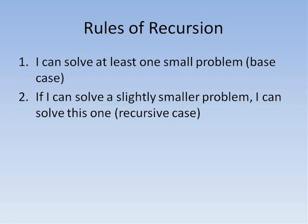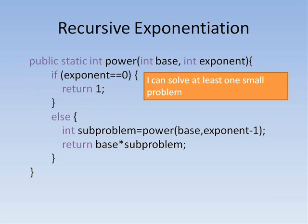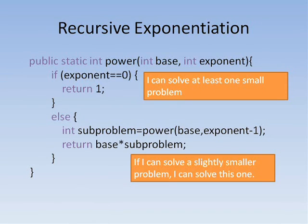I assume that my method is going to solve that correctly, then I use that solution to find the solution to my problem. Looking at a recursive solution to exponentiation, I see that if exponent is zero, I return one. This is the base case, a small problem I know how to solve directly. Otherwise, I ask for the answer to a slightly smaller problem — base to the exponent minus one. Once I have that, I can solve this problem by simply multiplying the answer to the subproblem times base.